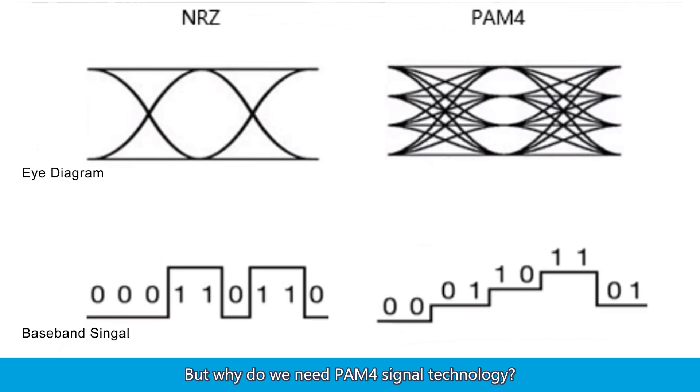But why do we need PAM-4 signal technology? The global bandwidth optical transmission market continues to experience significant demand growth. Existing network technologies and infrastructure face higher requirements for signal transmission capacity. Traditional NRZ signals encounter transmission bottlenecks due to this massive bandwidth demand. PAM-4 signal technology, as a mature alternative, addresses the limitations of NRZ signals and maintains lower construction costs while meeting the growing bandwidth needs.